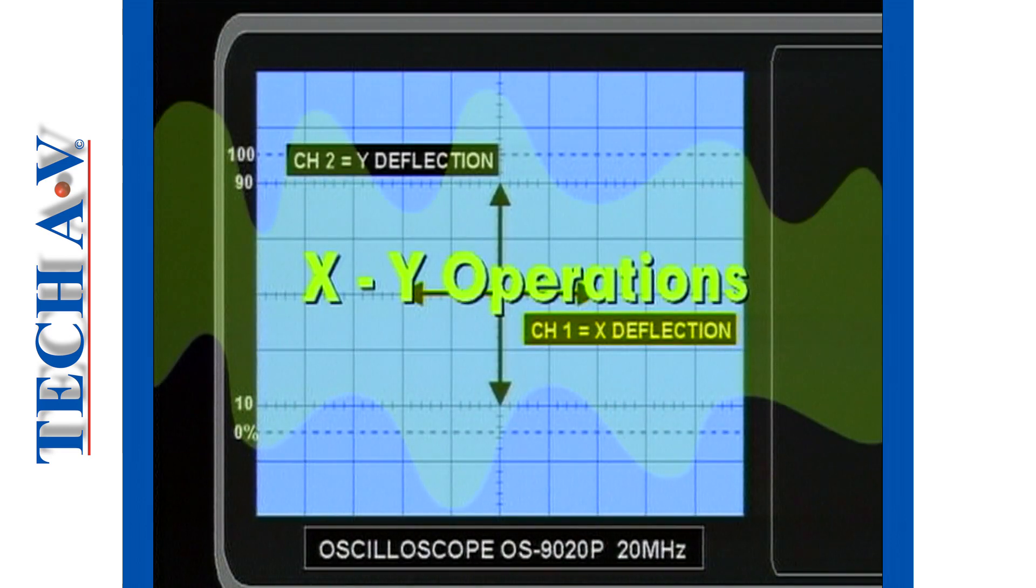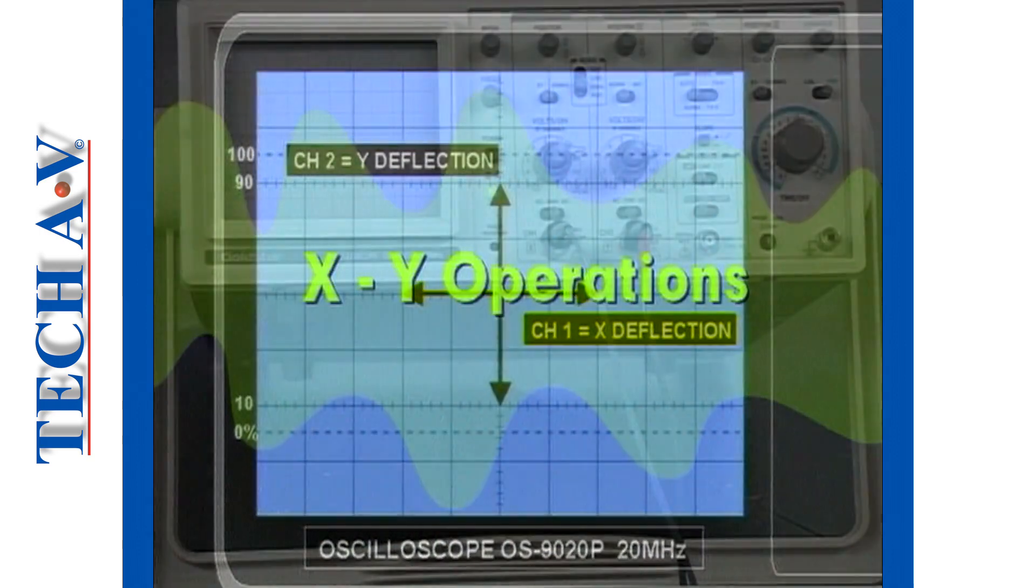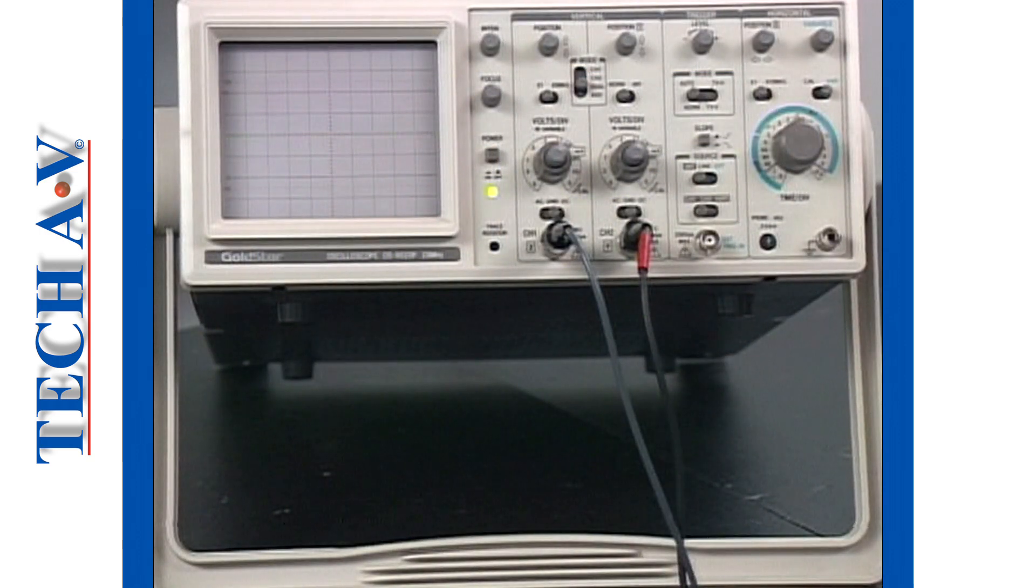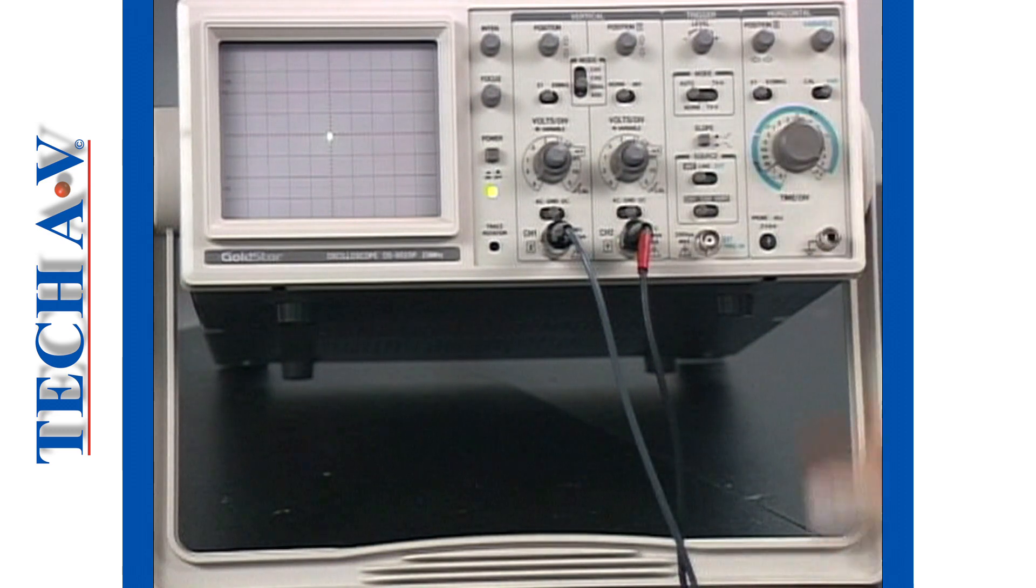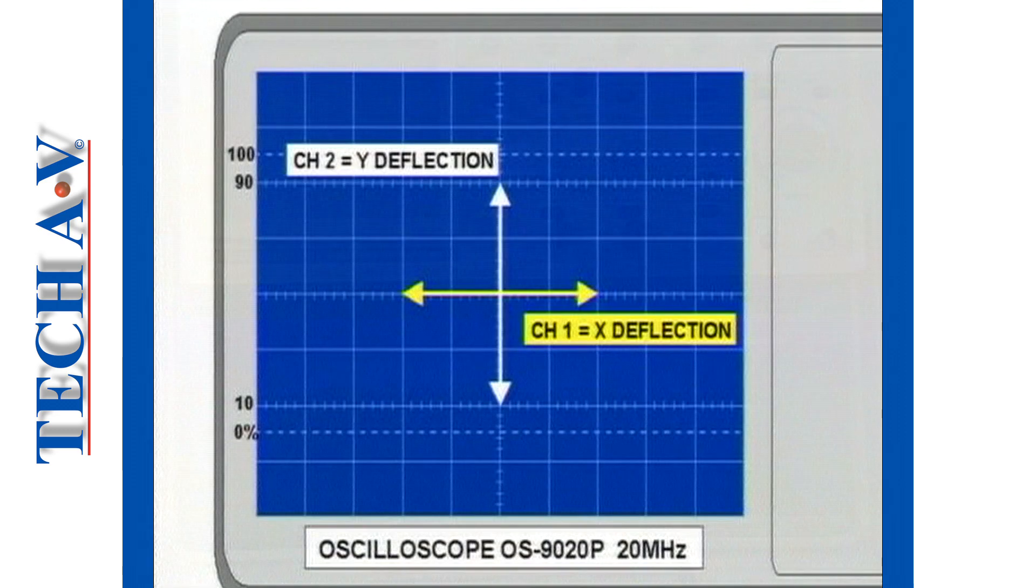The measurement procedure just described may seem confusing, so let's briefly explain what occurs during XY operation. Normally, the horizontal time base is free running. However, when the XY setting is chosen, the time base stops and the horizontal trace becomes a spot. Channel 1 now becomes the X deflection input and channel 2 remains as the Y deflection input.